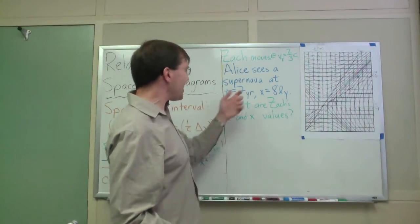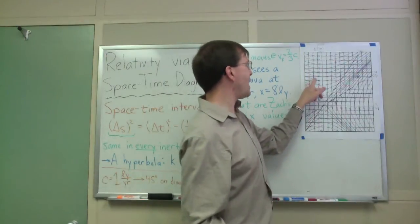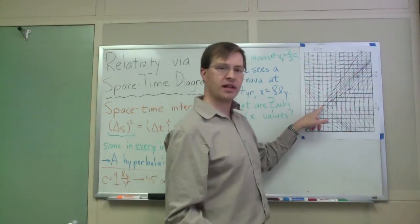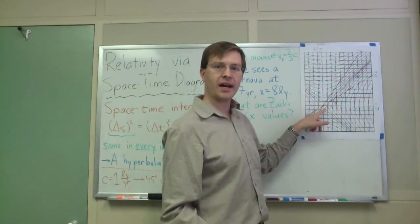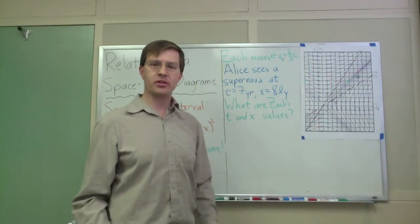All right, so given that, Alice sees a supernova happen. Alice sees the supernova at time equals seven years, and position equals eight light years away from as measured relative to the origin when Zach flew by. We want to know, what does Zach measure for those things?